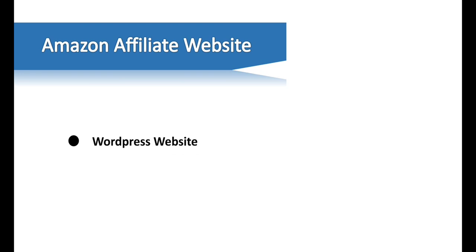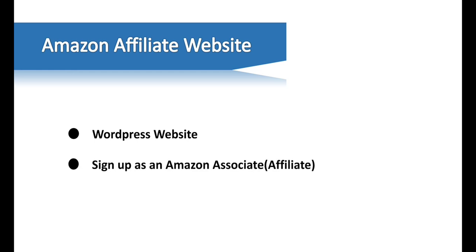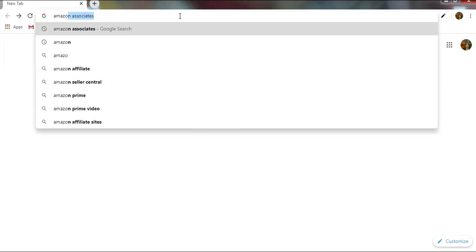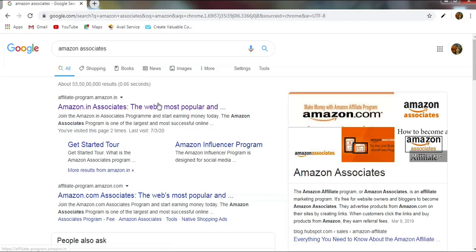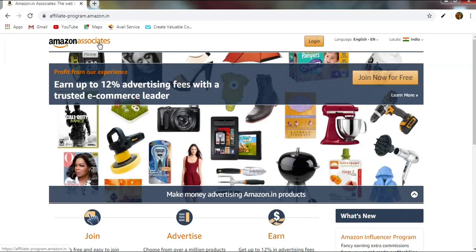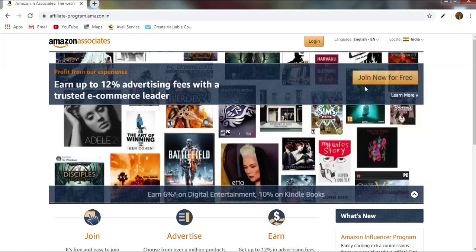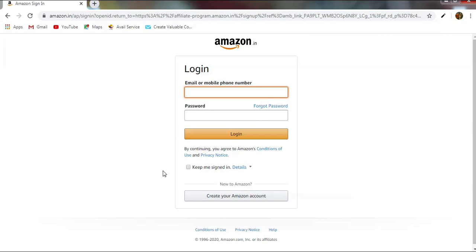For creating an Amazon affiliate website, first you need a WordPress website. If you already have one, that's perfect. If not, it's pretty simple to create a new WordPress site — you can refer to our previous video on how to create a blog or website on WordPress. The second thing is you have to sign up as an Amazon Associate. Creating an Amazon Associates account is free — just search for Amazon Associates, click the link, and click 'Join Now for Free.'